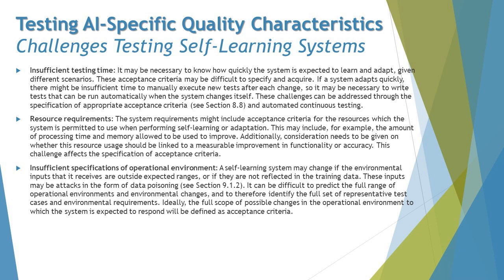Acceptance criteria will be discussed in section 8.8 of this chapter. Having acceptance criteria defined strongly and according to expectation is really important, otherwise you will not have the required time for execution. Regarding resource requirements, the system requirements might include acceptance criteria for the resources which the system is permitted to use when performing self-learning or adaptation — for example, the amount of processing time and memory allowed. Consideration also needs to be given to whether resource usage should be linked to a measurable improvement in functionality or accuracy.